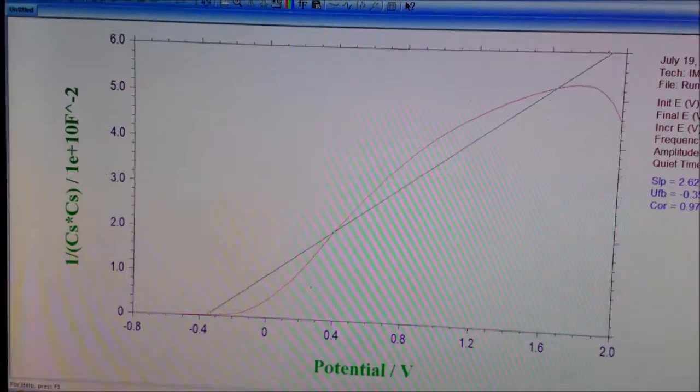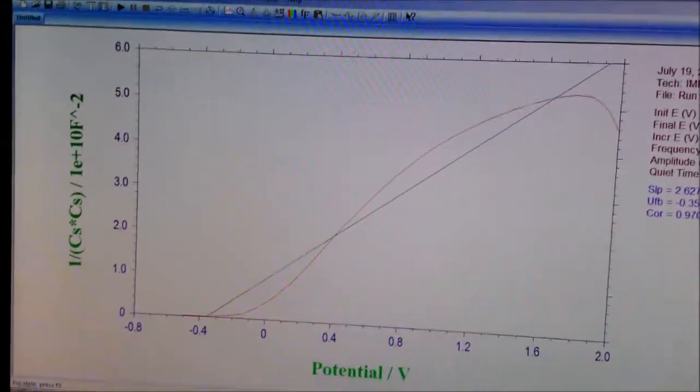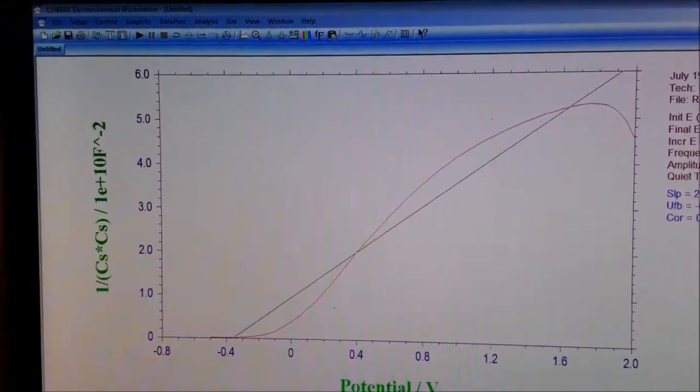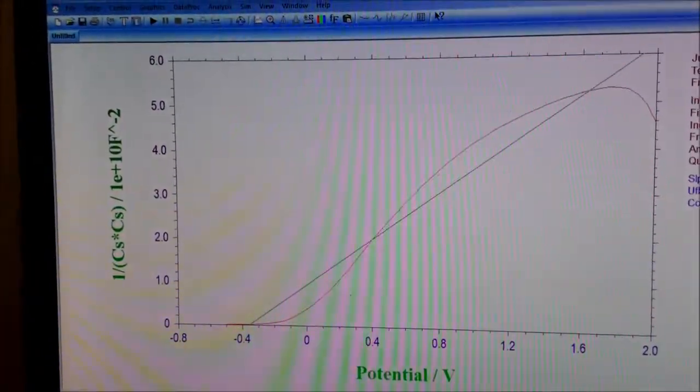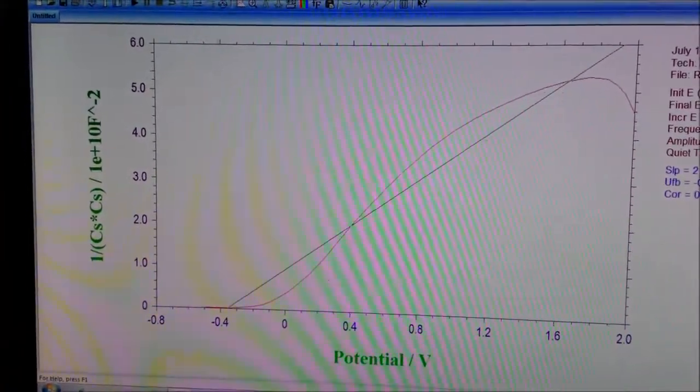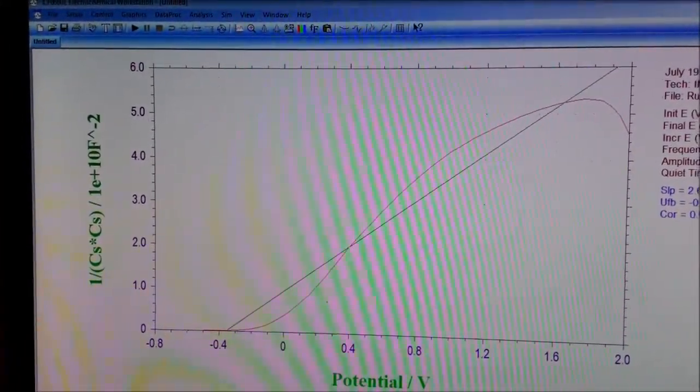So I hope you have understood how to perform the Mott-Schottky measurements using the CH Instruments and how to get the 1/Cs² versus potential plot in this software.